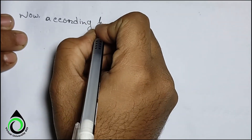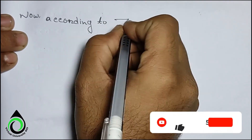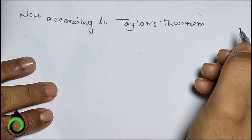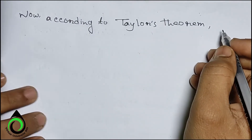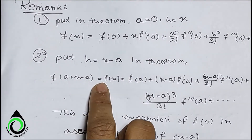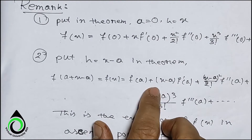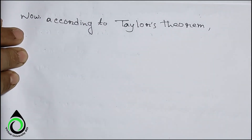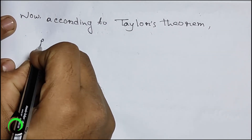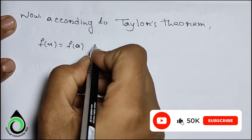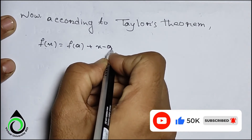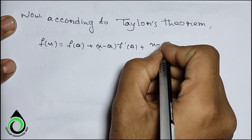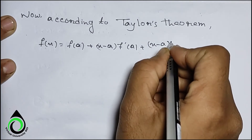According to Taylor's theorem, f(x) = f(a) + (x−a)·f'(a) + (x−a)²/2!·f''(a) + … Putting a = 1, we get: log x = 0 + (x−1)·1 + (x−1)²/2!·(−1) + (x−1)³/3!·2 + (x−1)⁴/4!·(−6) + …